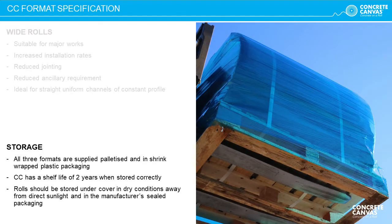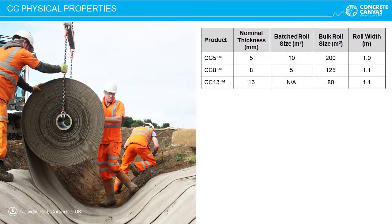CC wide rolls increase installation rates and reduce the requirement for jointing. Available in two-wide or three-wide formats, wide rolls are suitable for straight, uniform channels of constant profile. All three formats are supplied palletised and in shrink-wrapped plastic packaging with a minimum shelf life of two years when stored correctly. CC is available in three different thicknesses — CC5, CC8 and CC13 — where the number indicates their thickness in millimetres.